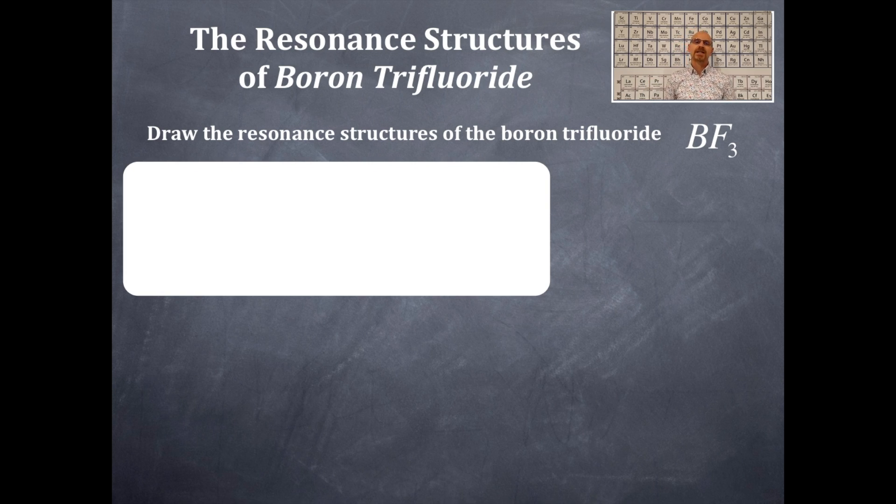The least electronegative element goes in the middle and the fluorine surround that boron. Then you're going to place those electrons around the central element and in between the central element and the outside element to find bonding pairs. Then lone pairs of electrons around the outside element. After that, you're going to verify the octet rule for boron and for fluorine. You're going to have to have a double bond. So that is the structure you should have right there. You would have two more structures just like that.